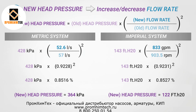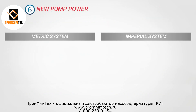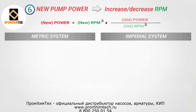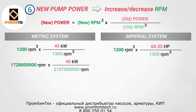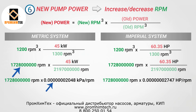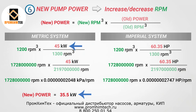The next step is to calculate the pump power, which is the power consumed by the pump in order to move and increase the pressure of a fluid. The power requirement depends on several factors, including pump motor efficiency. To calculate the new power when changing RPM, we cube the new RPM and multiply it by the division of the old power by the old RPM cubed — make sure to cube both RPM values. The result shows the new power comes down to 35.5 KW compared to the initial 45 KW. In the imperial system, the power comes down from 60.35 KW to 47.5 KW.